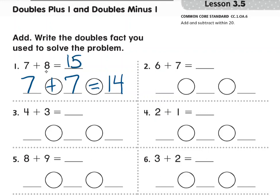So 7 plus 8 equals 15. That was a doubles fact, and then you had to add 1, so that was doubles plus 1 to get your answer.